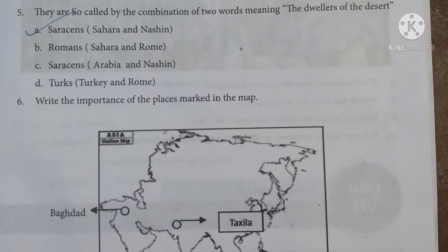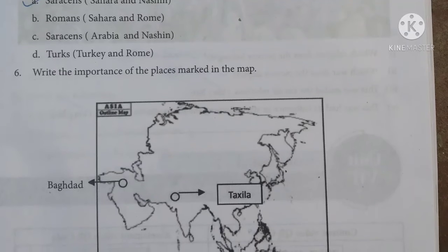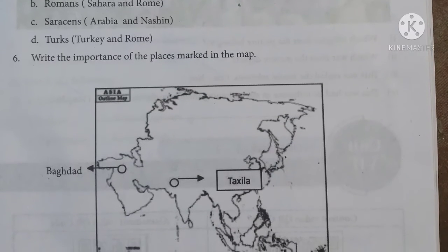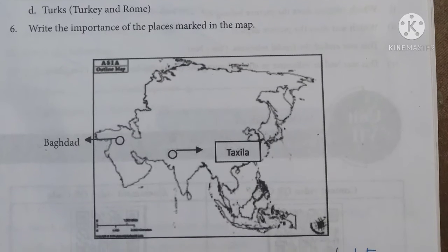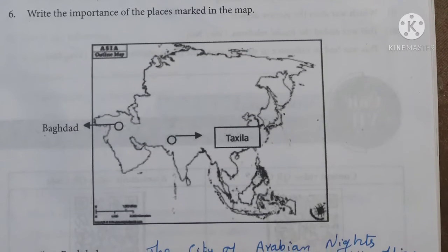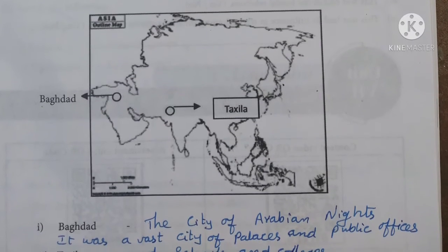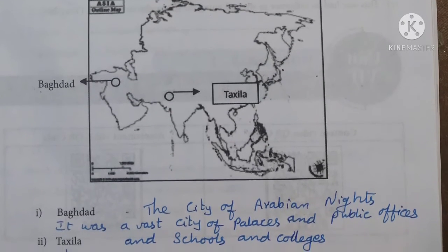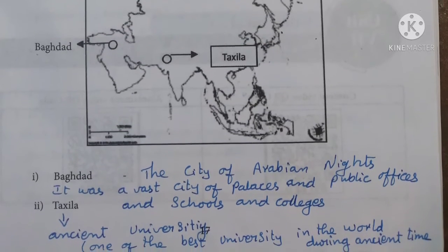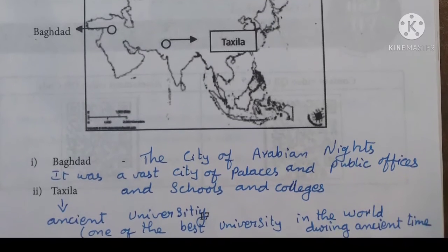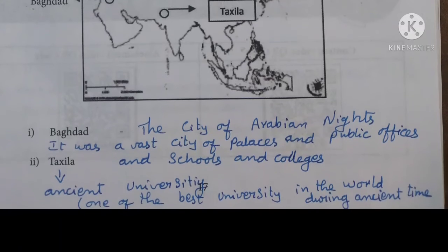The sixth question: write the importance of the places marked in the map. You have to mark Baghdad and Taxila. Baghdad is special — it is the city of Arabian Nights, a vast city of palaces, public offices, schools, colleges, and markets. Taxila is an ancient university, one of the world's best universities during ancient times.